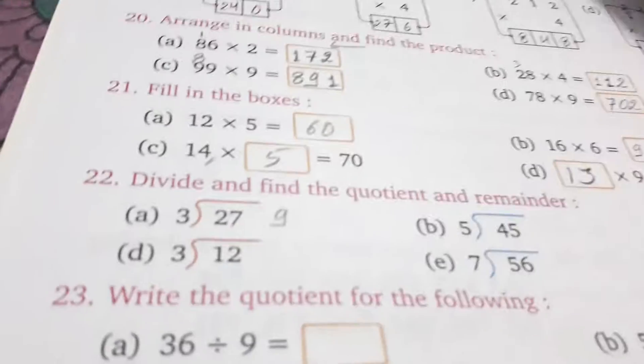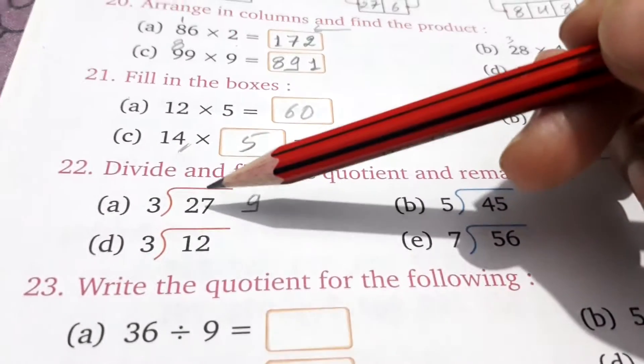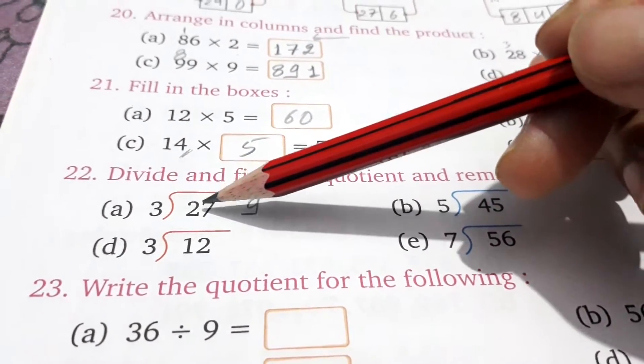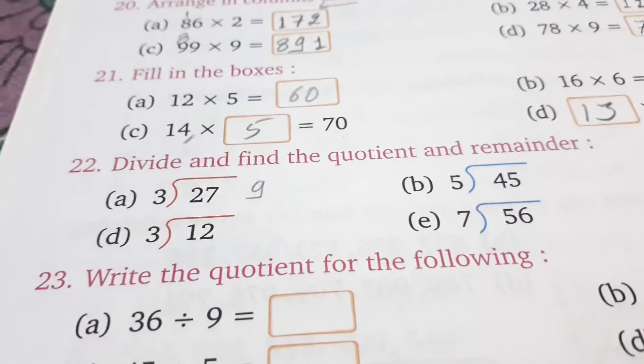Now, number 22. 22 is in divide. So, 3 is in which digit? 27. So, 3 nines are 27.